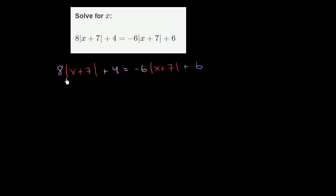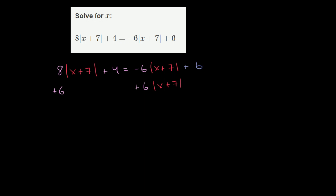Let's try to solve for not x first — we're going to solve for the absolute value of x plus 7. I want to get all of the absolute values of x plus 7 on the left hand side, so I want to get rid of the one on the right hand side. The easiest way is to add 6 times the absolute value of x plus 7 to both sides. So plus 6 times the absolute value of x plus 7.